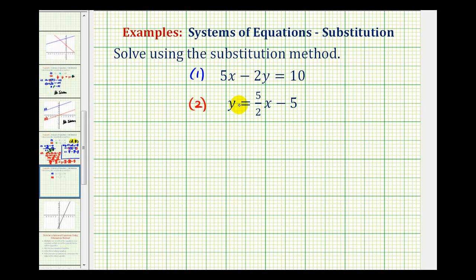The first step in the substitution method is to solve one of the equations for one of the variables. Luckily, if we take a look at equation two, it's already solved for y. We have y equals five halves x minus five.